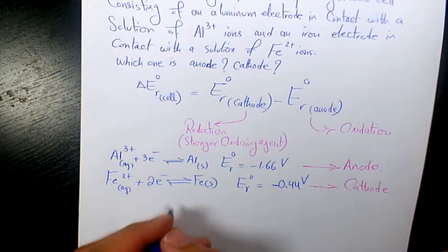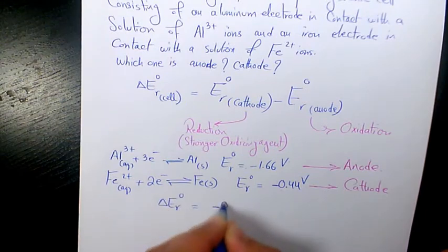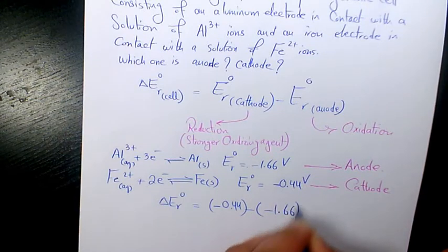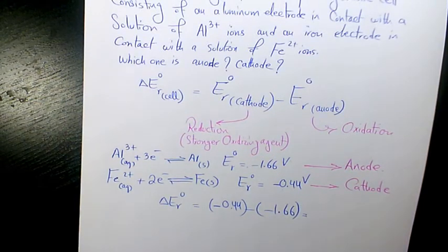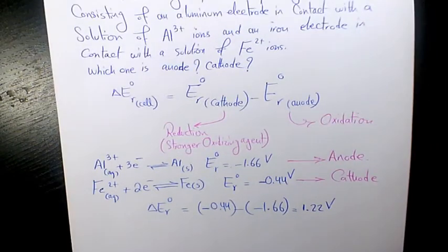And then we have ΔE° equals negative 0.44 minus negative 1.66, so it is going to be 1.22 volts. That's going to be the voltage produced by this galvanic cell. Thank you.